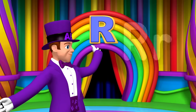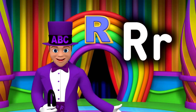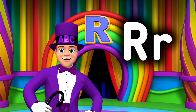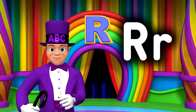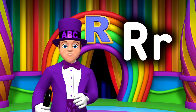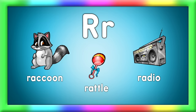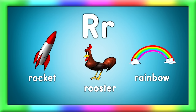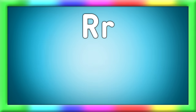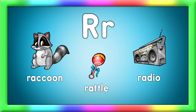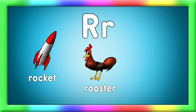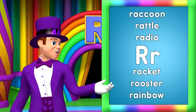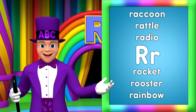Radical! Look at the capital R and the lowercase r. Let's sing words that begin with R. Join with me now, here they are. Raccoon, rattle, and radio. Rocket, rooster, and rainbow. Raccoon, rattle, and radio. Rocket, rooster, and rainbow. Our words are all around, look for them and they'll be found.